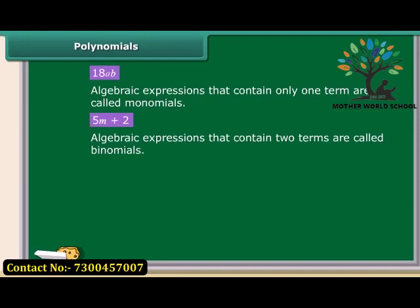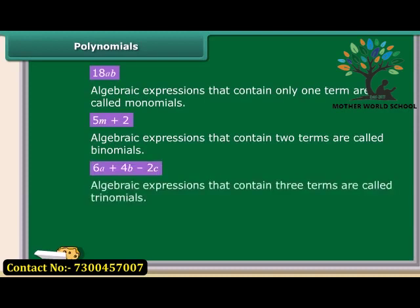This type of algebraic expression is called binomial. The expression 6A plus 4B minus 2C is not a binomial because it has three terms, right? So, this type of algebraic expression is called trinomial.